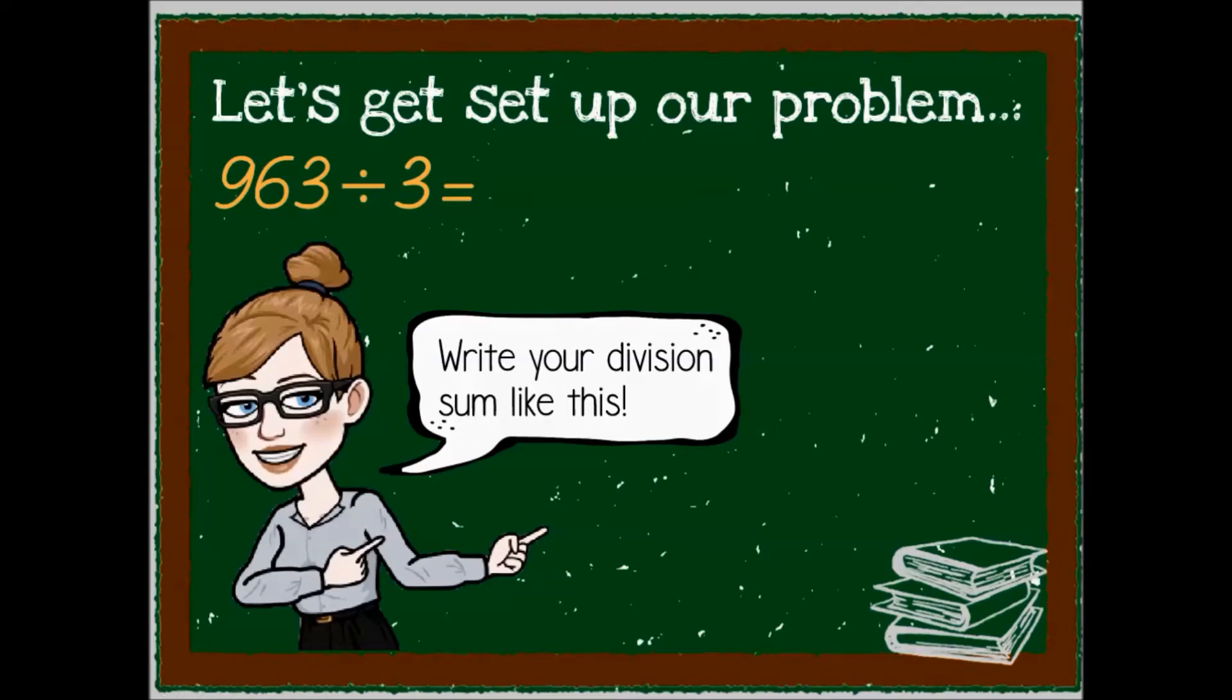Back to long division. Here we have a typical problem that we spoke about before. A large number and it would take ages to count in threes all the way to 963. So we use the long division method. First, we have to set up our calculation. Draw a little house like this with a roof and a door. Put the large number inside the house and the smaller number at the door.